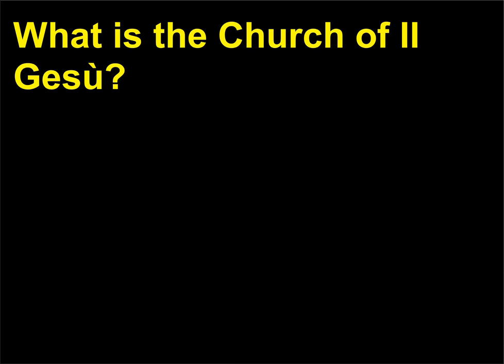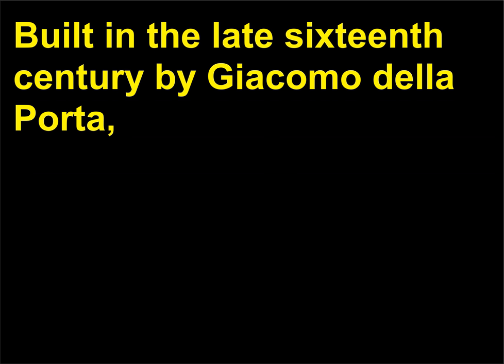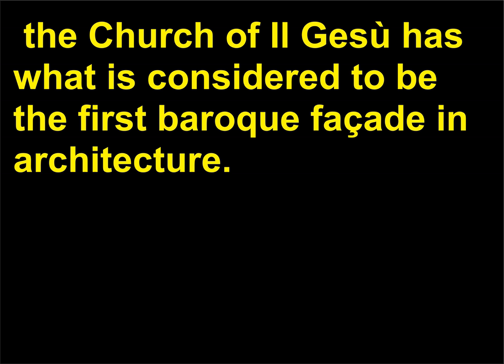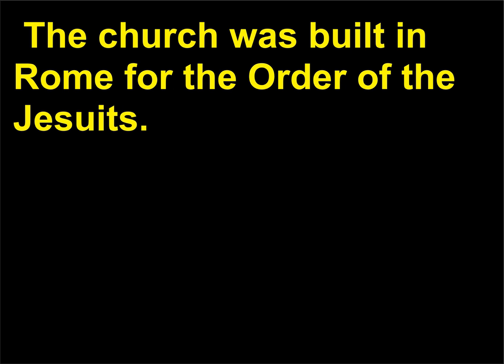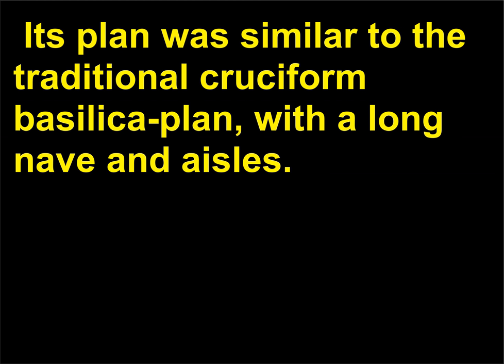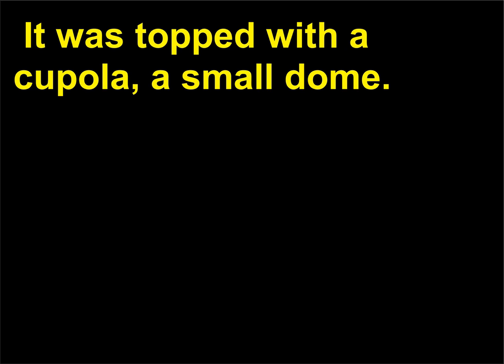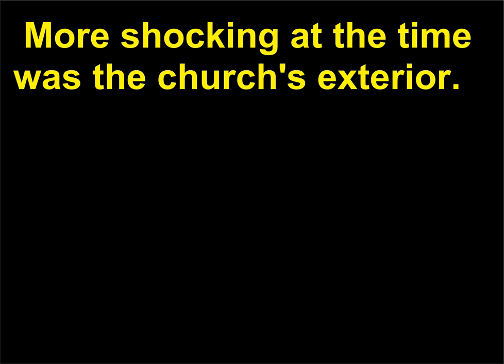What is the Church of Il Gesù? Built in the late 16th century by Giacomo della Porta, the Church of Il Gesù has what is considered to be the first Baroque facade in architecture. The church was built in Rome for the order of the Jesuits. Its plan was similar to the traditional cruciform basilica plan, with a long nave and aisles, and was topped with a cupola — a small dome. More shocking at the time was the church's exterior.